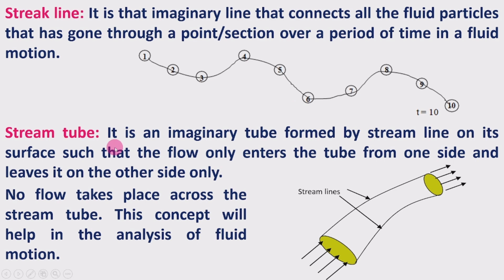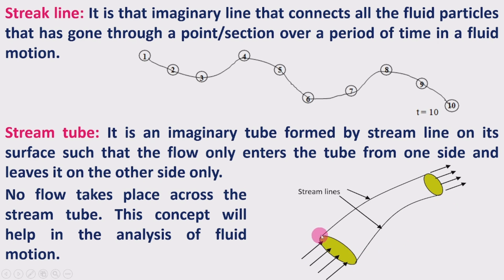Next is the stream tube. It is an imaginary tube in the fluid motion formed by streamlines. The streamlines we consider in the fluid flow form an imaginary tube, and that is called a stream tube. On its surface, flow only enters the tube from one side and leaves it on the other side only. The streamlines move in one direction and the tube is formed by the surface of those streamlines, so fluid enters on one end and leaves on the other.